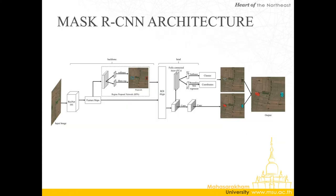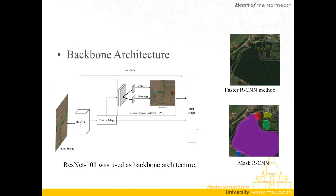Mask R-CNN architecture was presented by Kyle Ming Heen in 2017 for improving instance segmentation performance. Mask R-CNN architecture consists of two main parts: backbone and head. Backbone architecture consists of two main networks: CNN and RPN. The CNN used in this research is ResNet-101 architecture, using a pre-trained model derived from learning on the COCO dataset. This architecture can reduce network learning time.